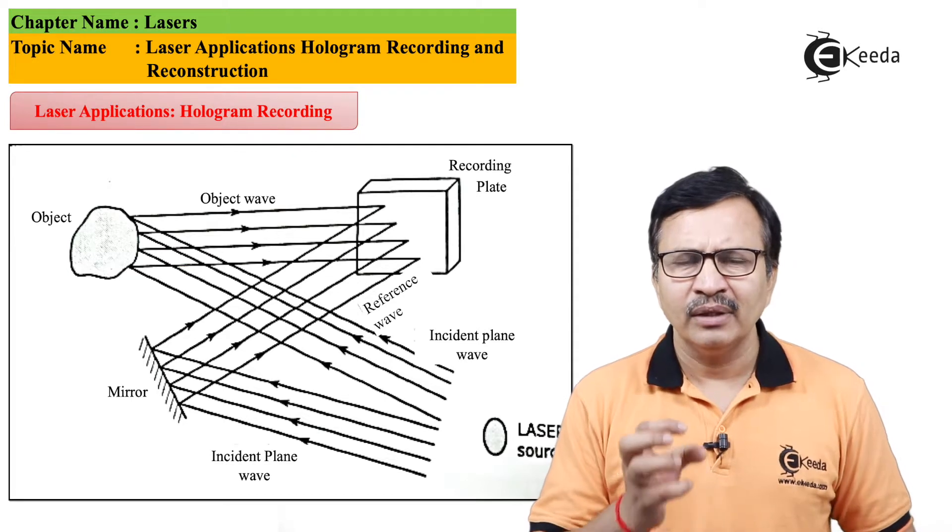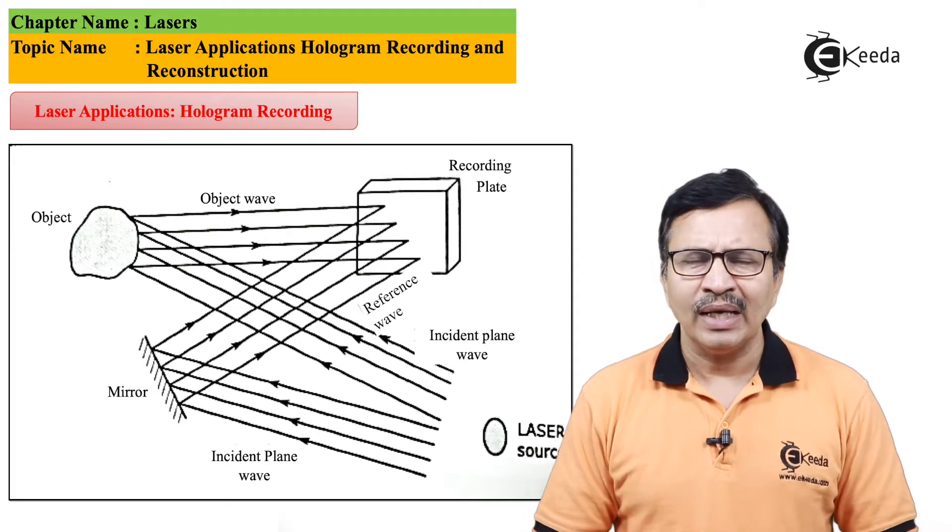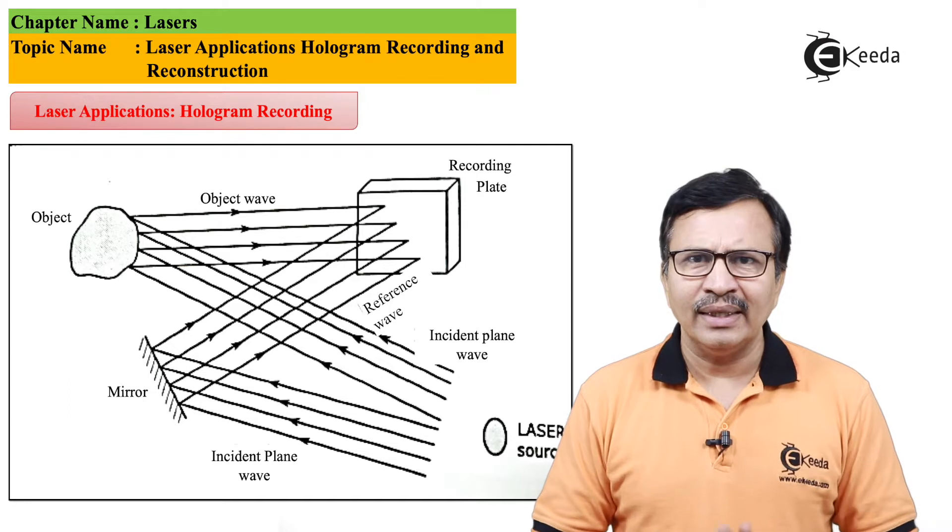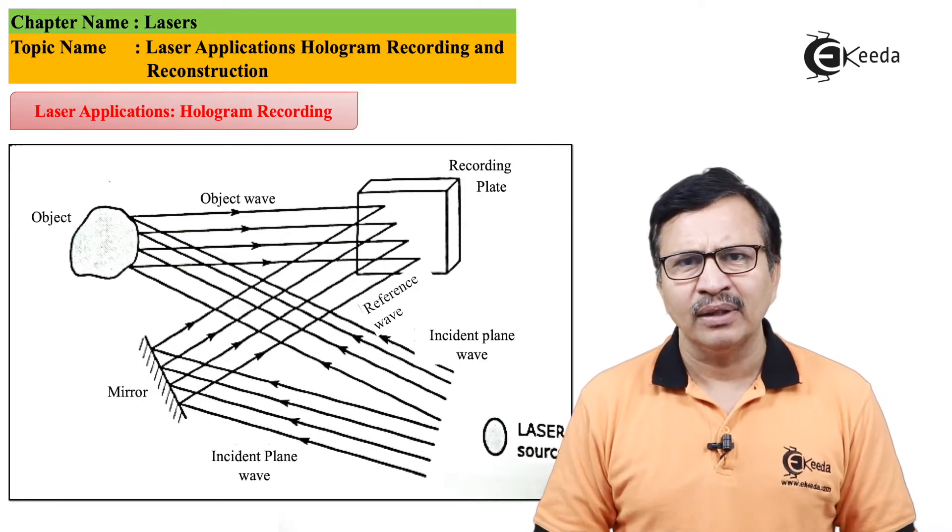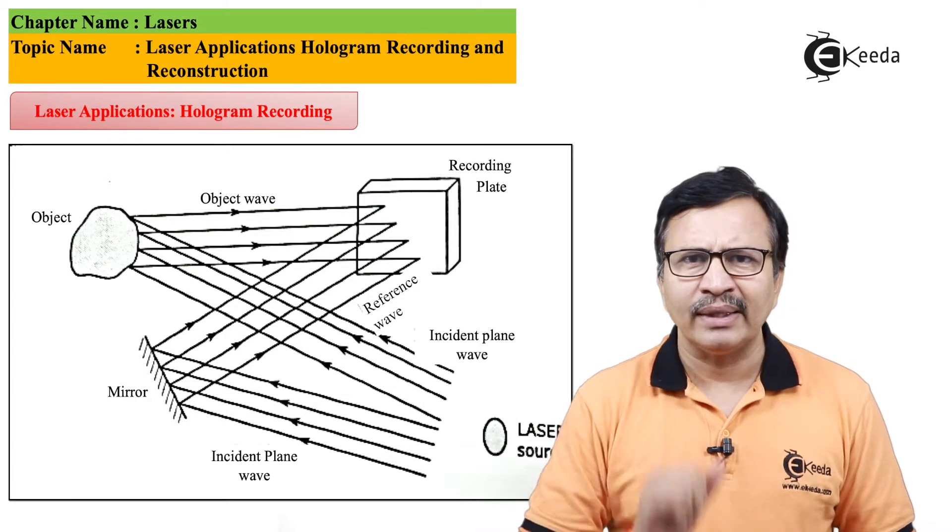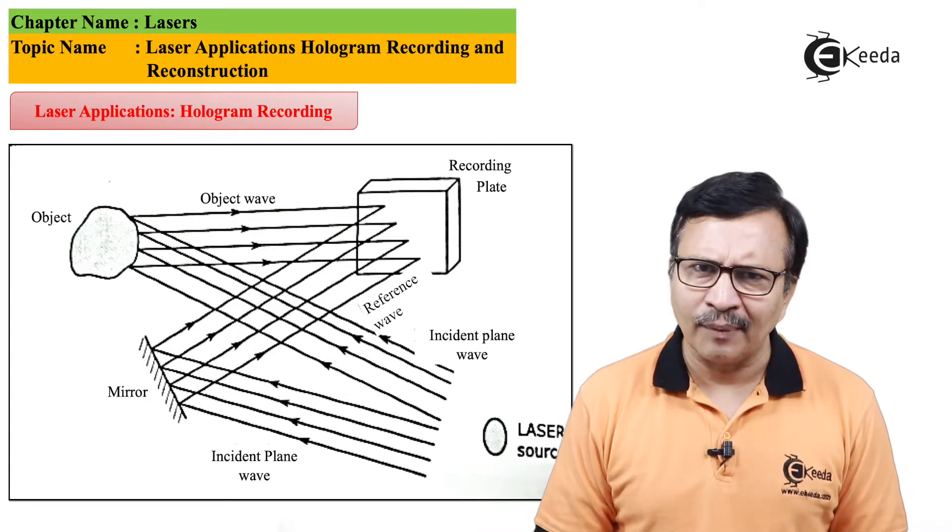But when they are interfering, they will capture the phase of the object and this phase and the intensity will be recorded as an intensity pattern on the photographic plate. This is how we record a hologram.